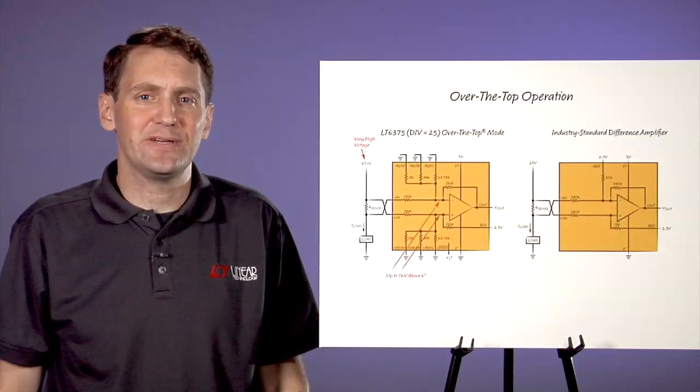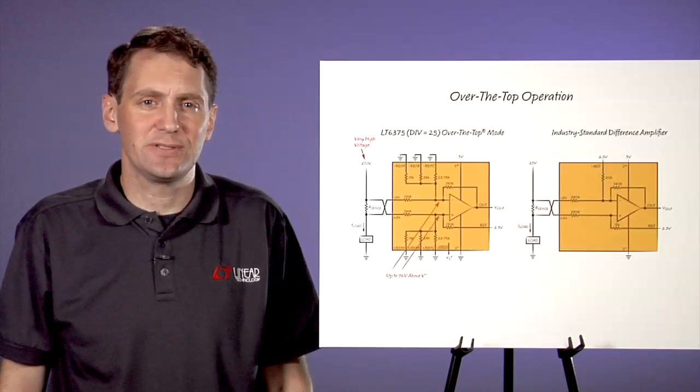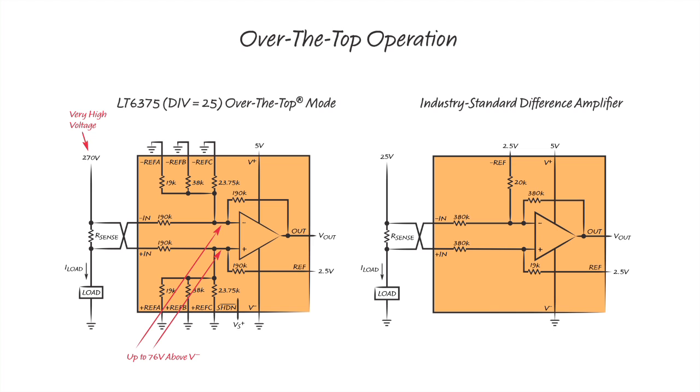The internal op amp in the LT-6375 has a feature unmatched by the competition. The op amp will continue to operate if its inputs are above its supply voltage. We call this over-the-top operation. This feature allows the difference amplifier to continue to operate at a reduced performance level when the inputs are far higher than the supply voltage.